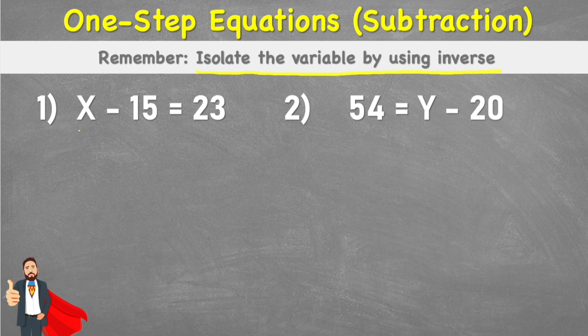So we have this question: x subtract 15 equals 23. So at the moment, x is our variable or our unknown. But at the minute it's linked to this negative 15 and therefore not on its own and quite hard to solve. So what we're going to try and do is we're going to try and remove this negative 15 and get the x on its own.